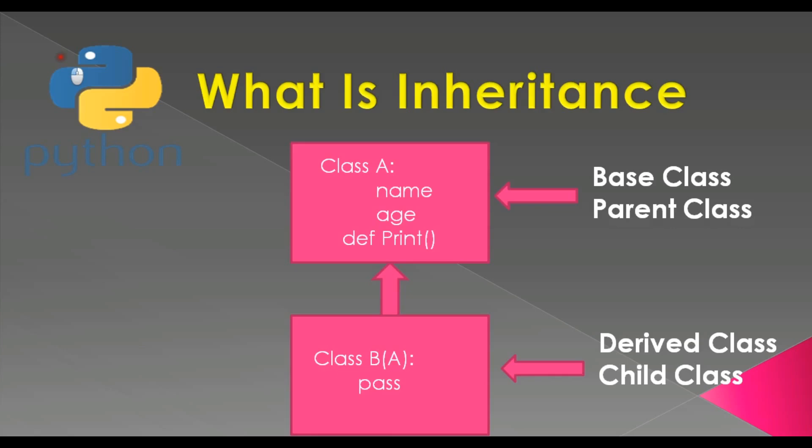Class A is called the base class, and we can also call it the parent class. For class B, we can call it the derived class, and also the child class. Now let me open my PyCharm IDE and show you a practical example of inheritance in Python.